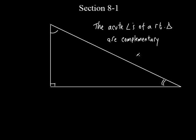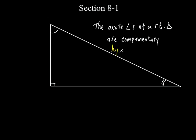Let's name some of this stuff. What about this side right here — the longest side? It has a particular name. It's opposite the right angle. The side that's opposite the right angle is the hypotenuse. It's the hypotenuse not because it's the longest side, even though it is — it's the hypotenuse because it's opposite the right angle.